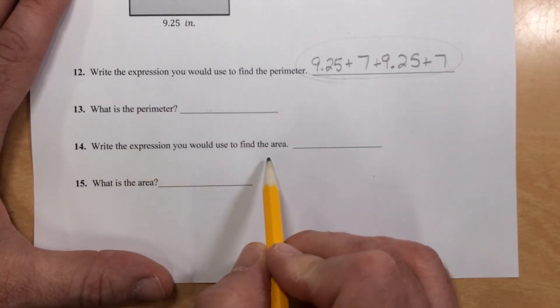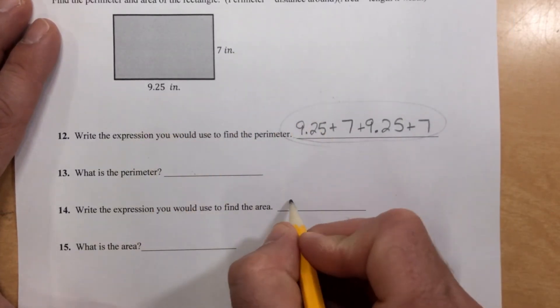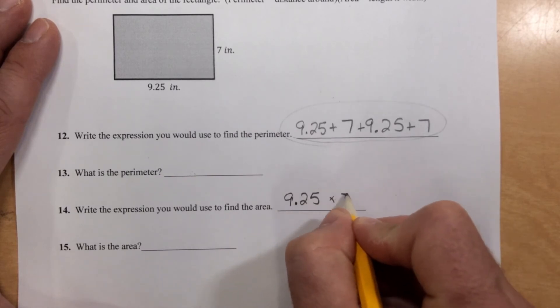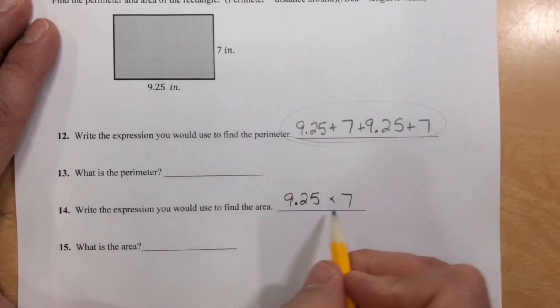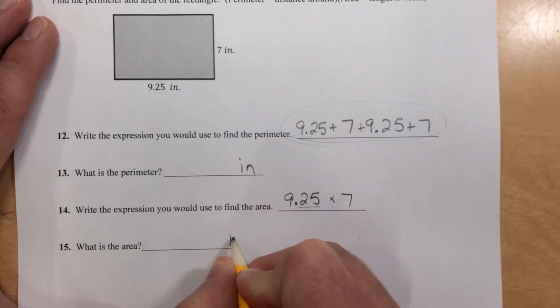Write the expression for the area. Area is length times width. So 9.25 times 7. When you're all done multiplying these, don't forget, two numbers behind the decimal in the problem. So two numbers behind the decimal in the answer. I'll let you multiply those together to get your answer here. Remember, this would be in inches, and this would be in inches squared because it's area. Multiply those two together to get your area.